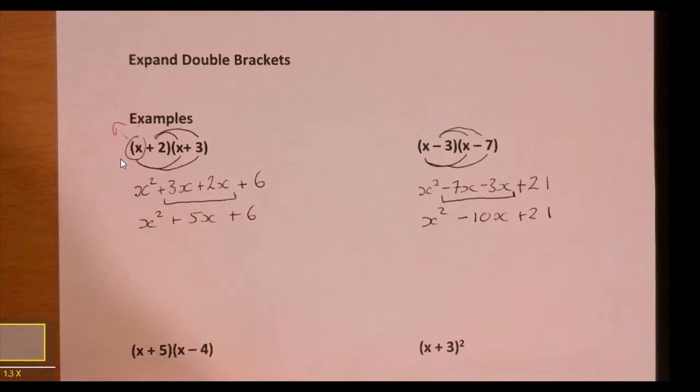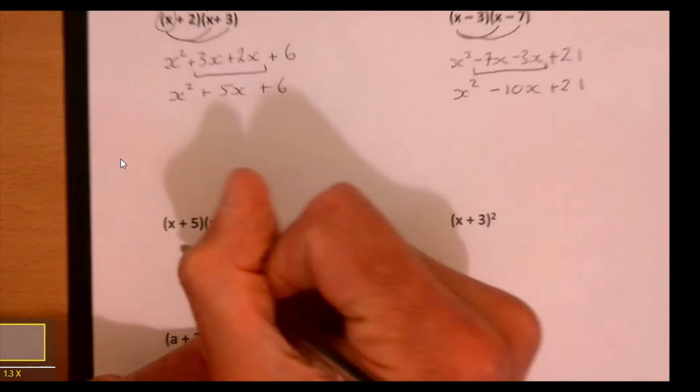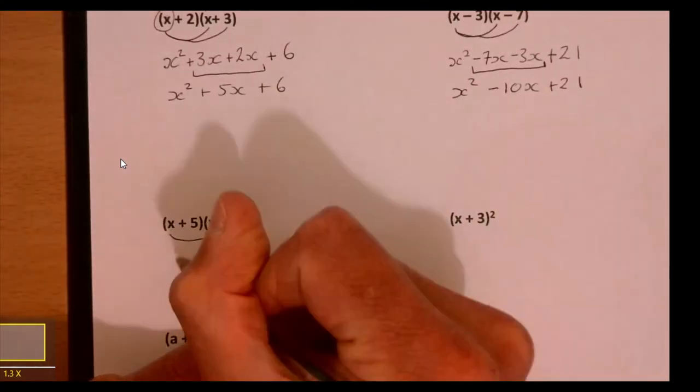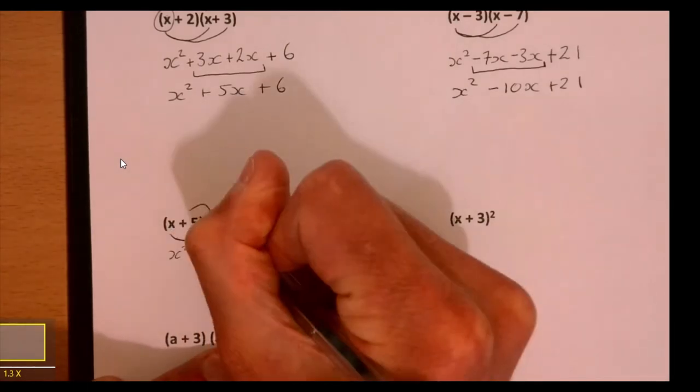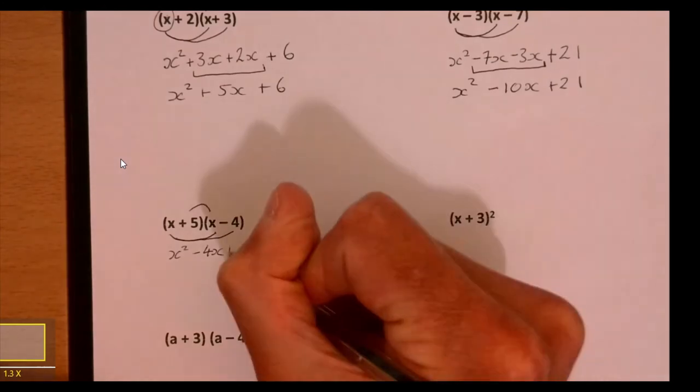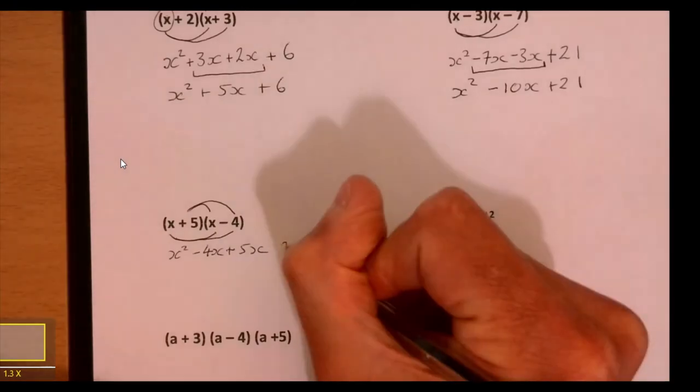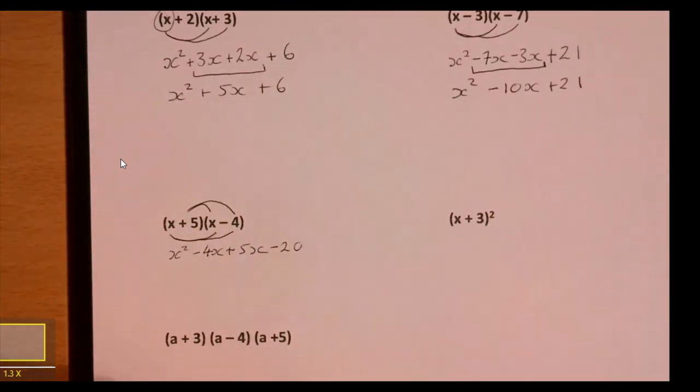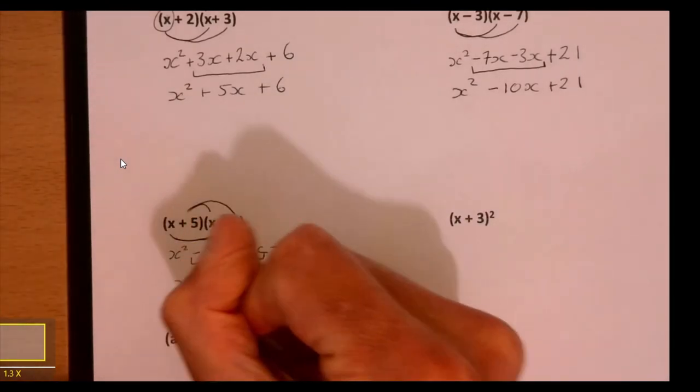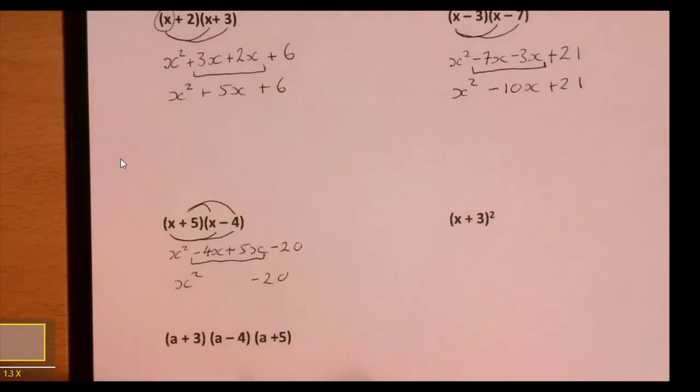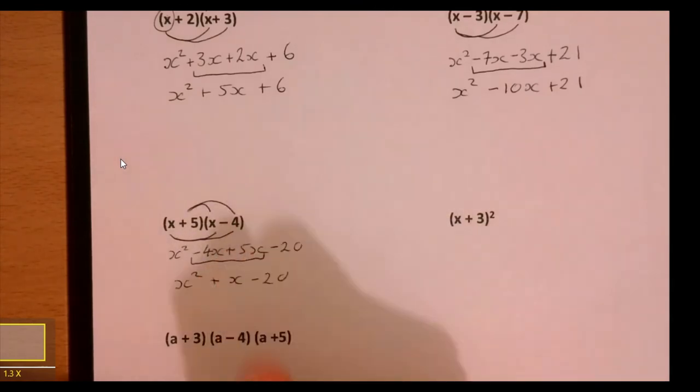Let's quickly look at these other ones. Same idea - x squared. If you keep practicing these the same way, you'll do them without thinking. Five times minus four is minus twenty. Tidying up: x squared minus 4x plus 5x is plus x, minus 20.